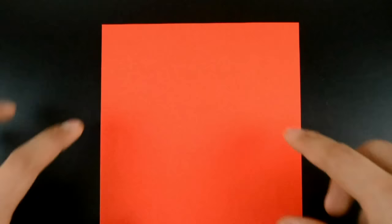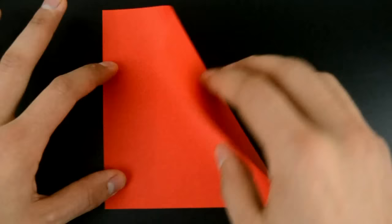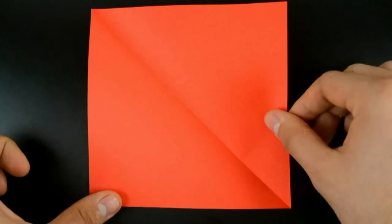The first step is to fold in half along both diagonals. First this one, then the opposite.